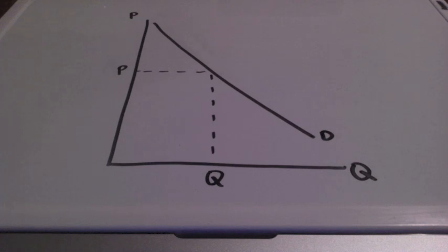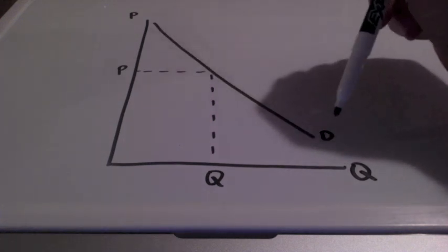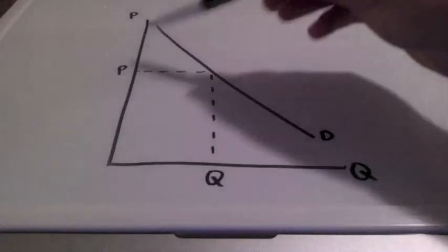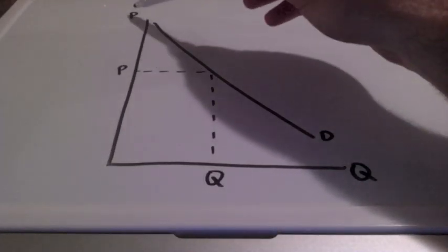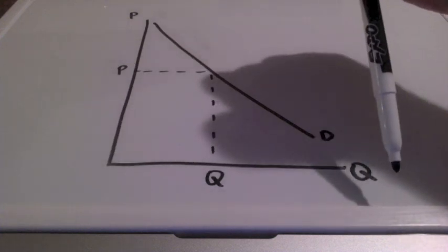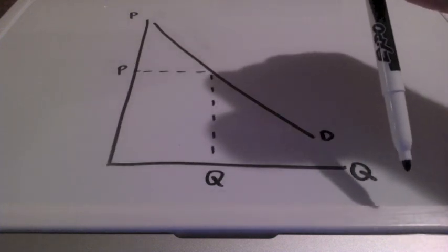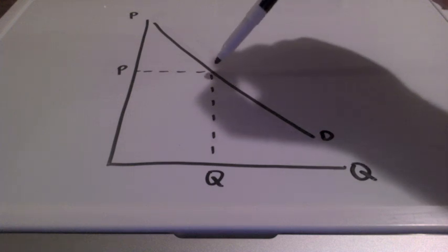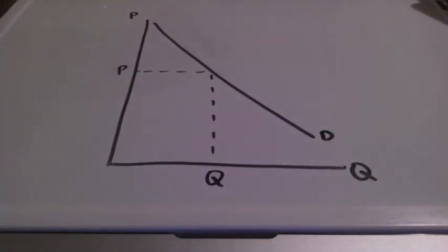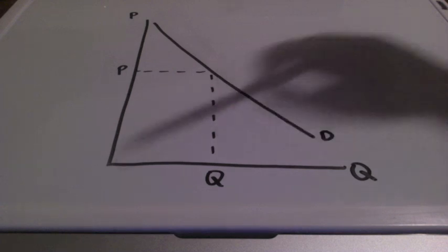The demand curve is downward sloping because there is an inverse relationship between price and quantity. This graph is set up with a vertical line representing price with the letter P and a horizontal line representing quantity with the letter Q. The center point of this demand curve is also known as an equilibrium point, which we're going to get into more when we establish our other curve known as our supply curve.